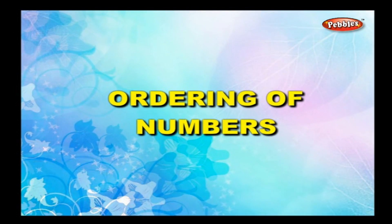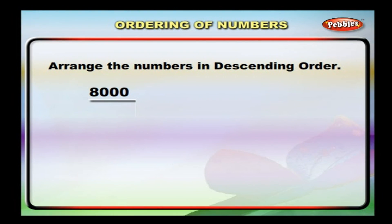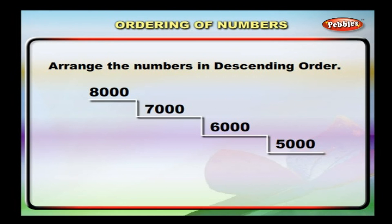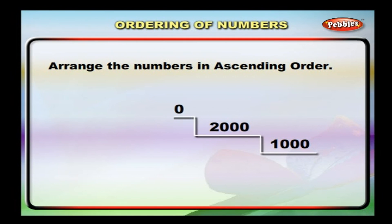Ordering of numbers. There are two types of ordering numbers: ascending order and descending order. When given numbers are arranged from the greatest to the smallest, it is called descending order — for example, eight thousand, seven thousand, six thousand, five thousand, and so on. When given numbers are arranged from the smallest to the greatest, it is called ascending order — for example, one thousand, two thousand, three thousand, four thousand, and so on.